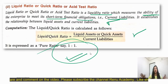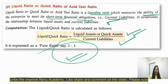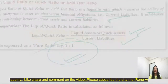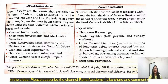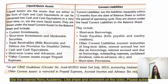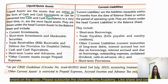The ideal ratio is one is to one. What is the liquid asset? The liquid asset is the asset that is either in the form of cash and cash equivalents.